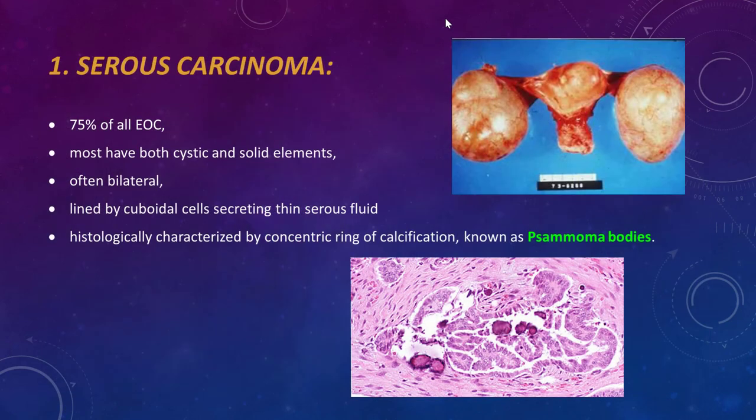The first type of epithelial ovarian cancer is serous carcinoma or serous cystadenocarcinoma, the most common at about 75% of all epithelial ovarian cancers. Most have both cystic and solid elements, appearing on ultrasound as a complex ovarian mass. Often bilateral, lined by cuboidal cells secreting thin serous fluid. Histopathologically, the tumor is characterized by concentric rings of calcification called psammoma bodies.